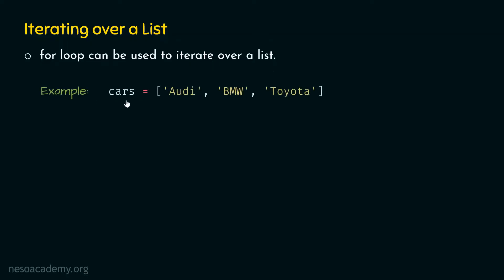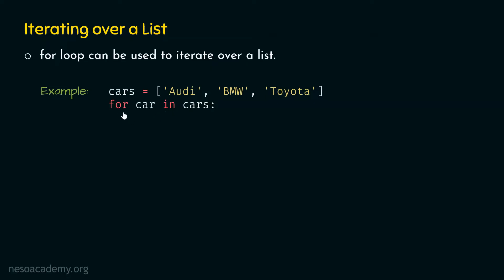Let's say that we have this list, cars. Here we have a total of three items: Audi, BMW, and Toyota. Now let's say we want to access these items and print them on the screen. For this purpose, we can use for loop with this statement: for car in cars. This statement allows us to access each item of this list, and these items are provided to the variable car one at a time. This is called for loop with the in keyword, which allows us to access these items one at a time.